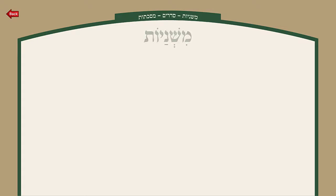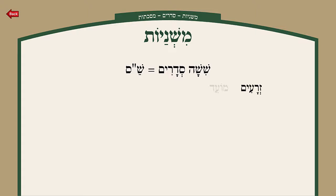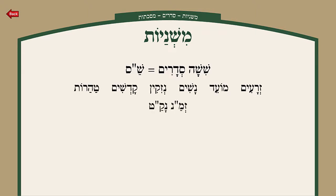So in the Mishnah we have Shisha Sidrei Mishnah — the Shas. There is Zeraim, Moed, Nashim, Nezikim, Kodashim, Taharos. The famous mnemonic is Zman Nakat. There's also another order where it goes Nezem Kotan, but let's leave that for now.